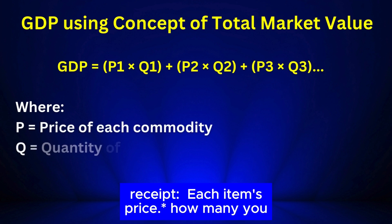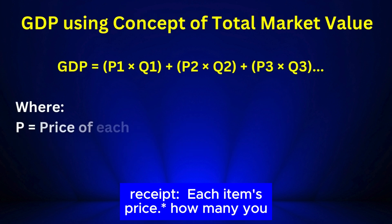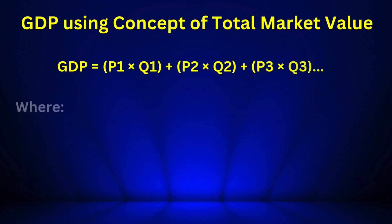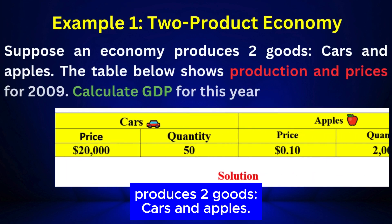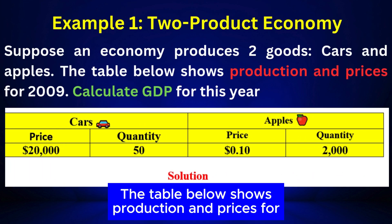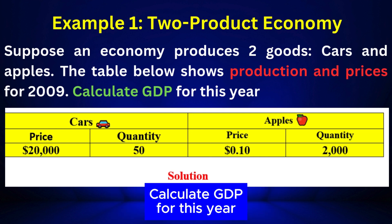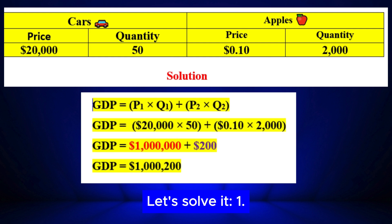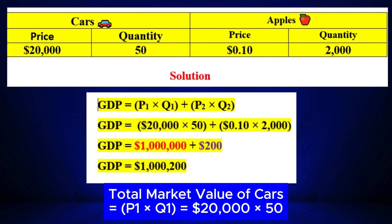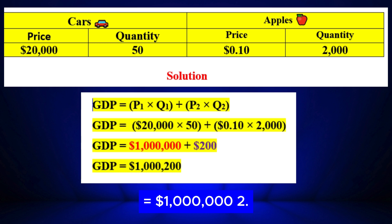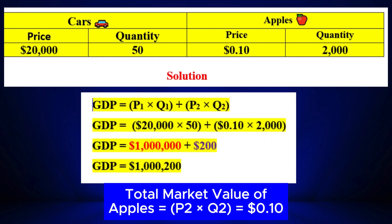Think of it like a shopping receipt — each item is the price times how many you bought, then add everything together. Example: a two-product economy. Suppose an economy produces two goods: cars and apples. To solve it — total market value of cars equals P1×Q1 equals $20,000 times 50 equals $1,000,000. Total market value of apples equals P2×Q2 equals 10 cents...